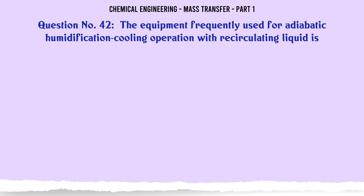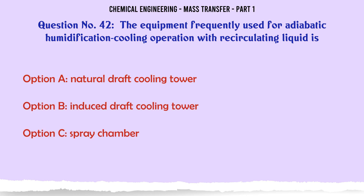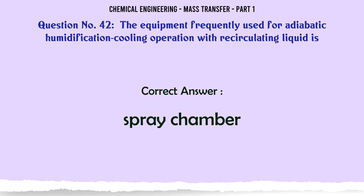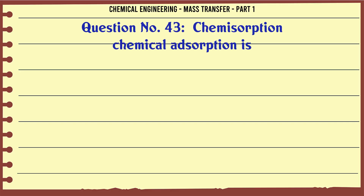The equipment frequently used for adiabatic humidification cooling operation with recirculating liquid is: A. Natural draught cooling tower. B. Induced draft cooling tower. C. Spray chamber. D. None of these. The correct answer is Spray chamber.